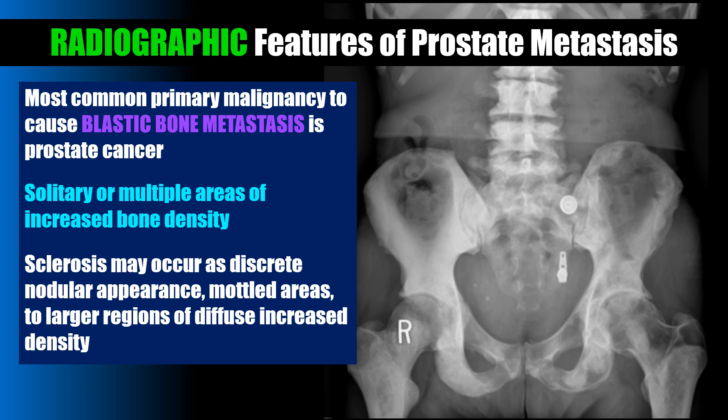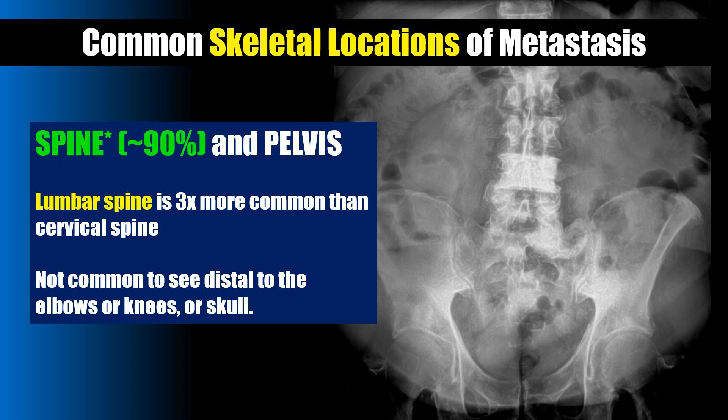When it comes to the radiographic features of prostate cancer, we're looking for blastic bone mets. Prostate cancer is the most common primary malignancy to cause blastic bone metastasis. We're looking for solitary or multiple areas of increased bone density; this sclerosis can occur as a discrete nodular appearance, as mottled areas, or as larger regions of diffuse increased density. The most common skeletal locations of metastasis are the lower lumbar spine and the pelvis — the lumbar spine is three times more common than the cervical spine. You're not likely to see mets distal to the elbows or distal to the knees, and acrometastasis is not likely to be seen in the skull, so focus on the spine and pelvis.